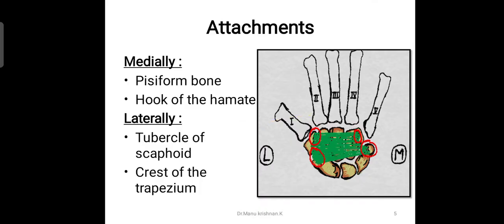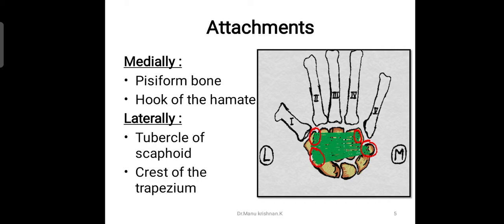Let's see the attachments of the flexor retinaculum. Medially, the flexor retinaculum — this tough strong band — is attached to two points: the pisiform bone and the hook of the hamate. These two are the medial attachments. Laterally, it is attached to the tubercle of scaphoid and the crest of the trapezium. The tubercle of scaphoid and the crest of the trapezium bone give attachment for the fibers of the flexor retinaculum. This is how the retinaculum bridges the concavity.